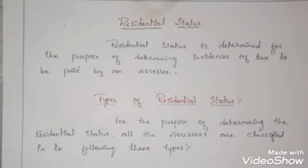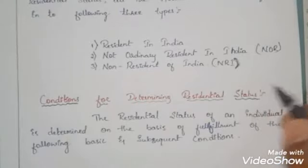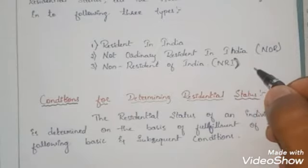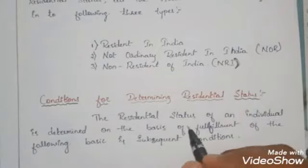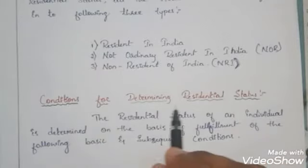There are three types of residential status. First, Resident in India. Second, Not Ordinarily Resident in India, which we call NOR. Third, Non-Resident of India, in short NRI. We will come back to these later after we understand the conditions for determining residential status.